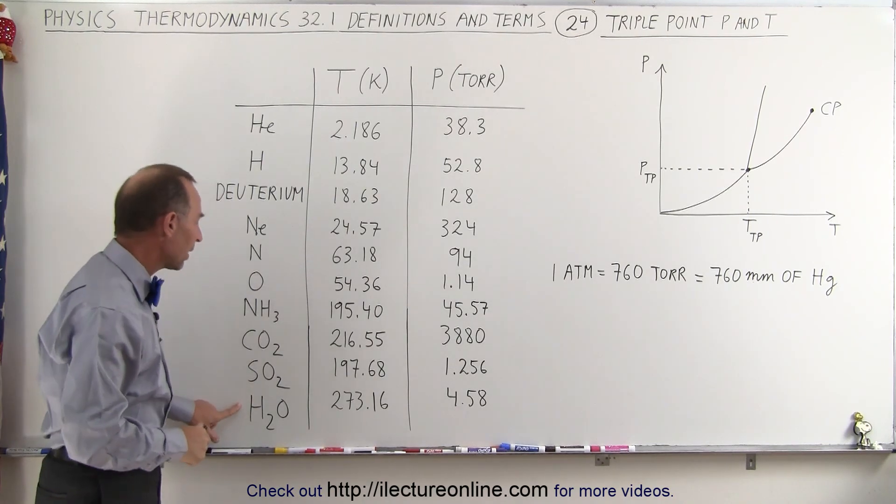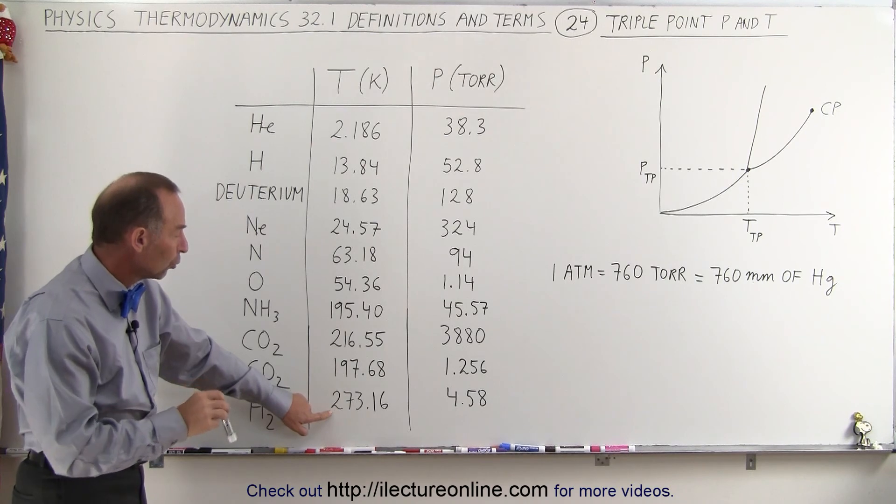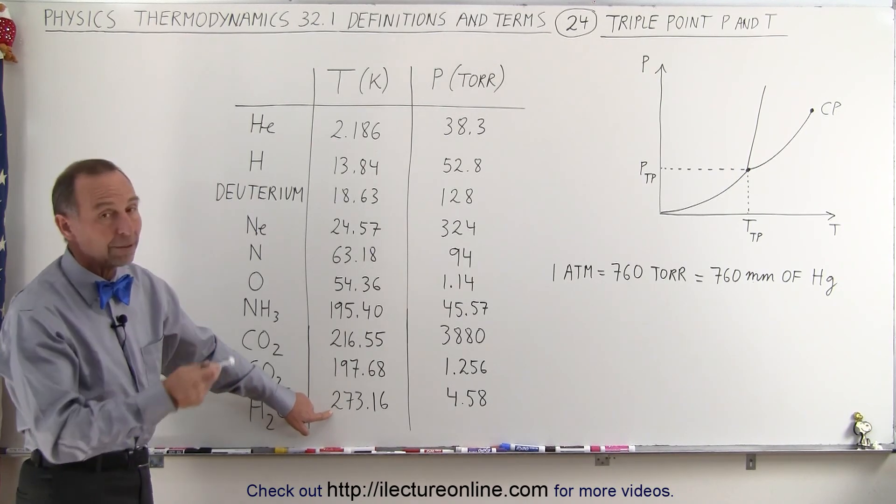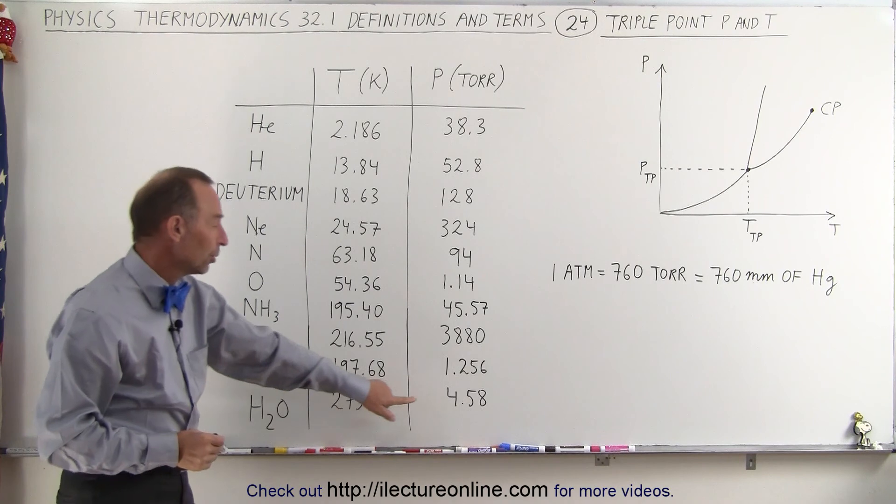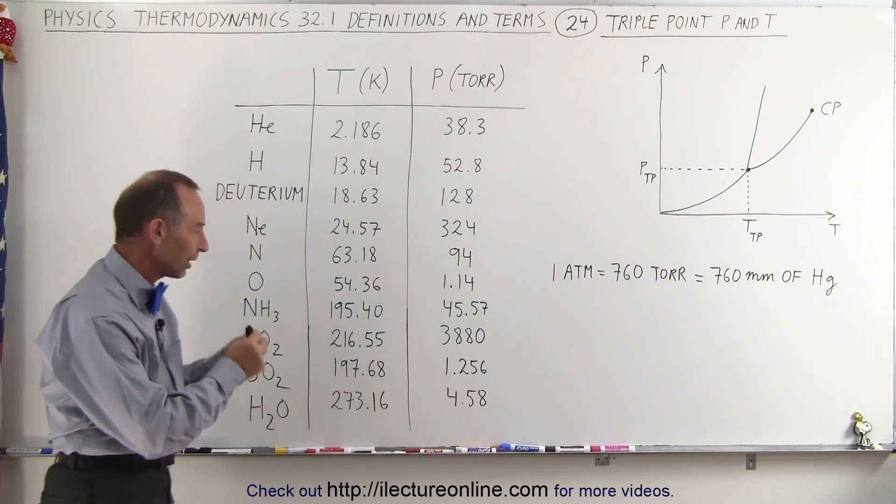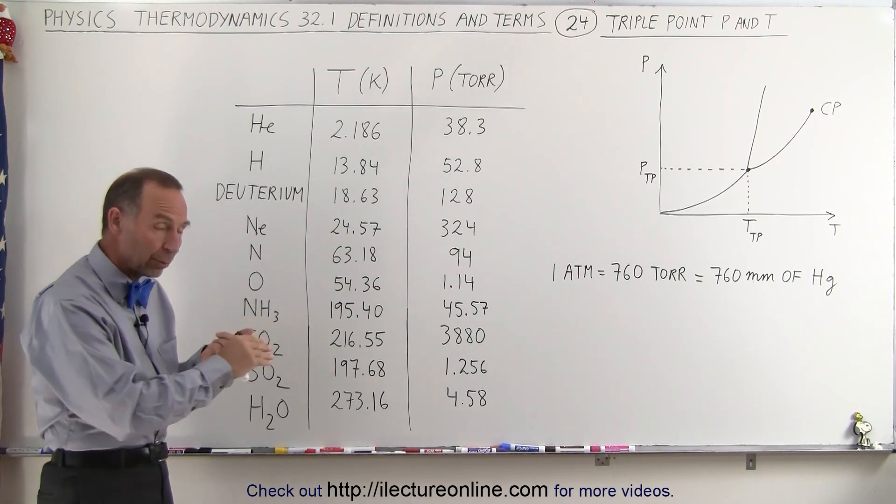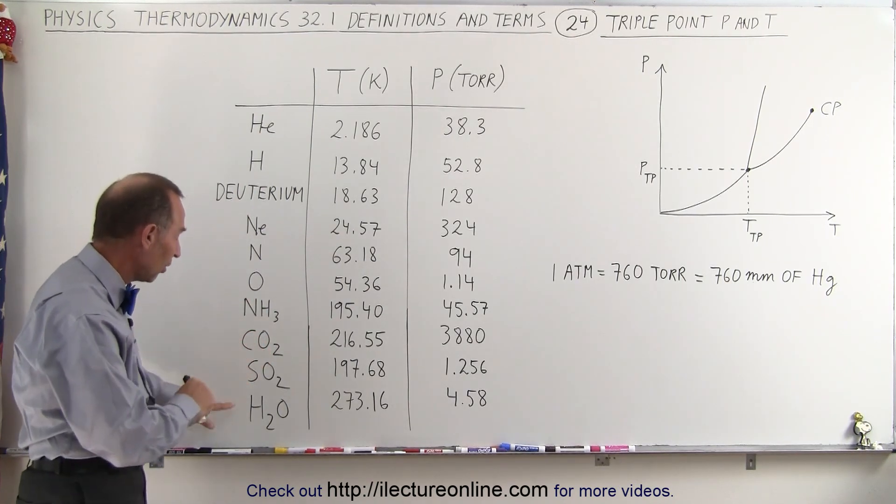So if we look at water right here, notice that the temperature is very, very close to the freezing point or melting point of water, very close to that. But notice that the pressure is far below atmospheric pressure. So for the conditions of water to exist so that water can exist both in the liquid, the vapor phase, and the solid phase.